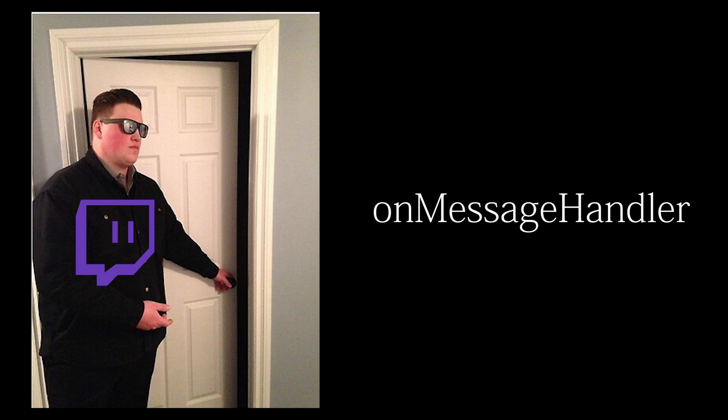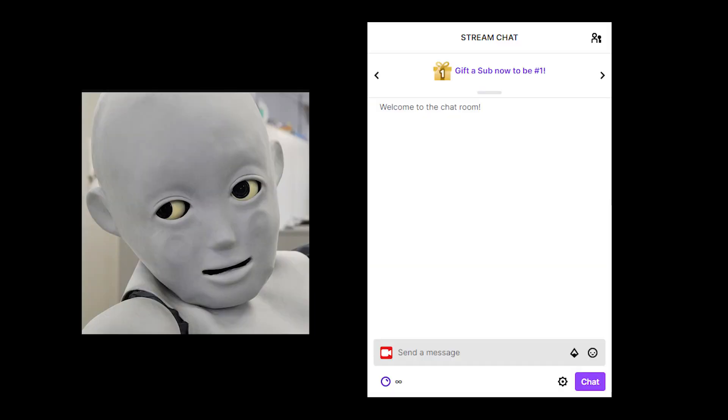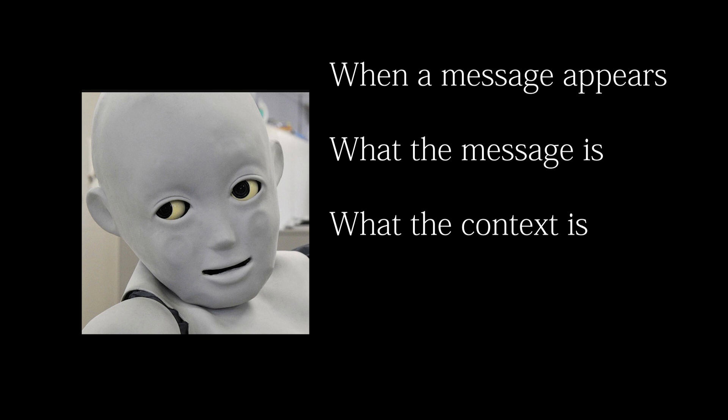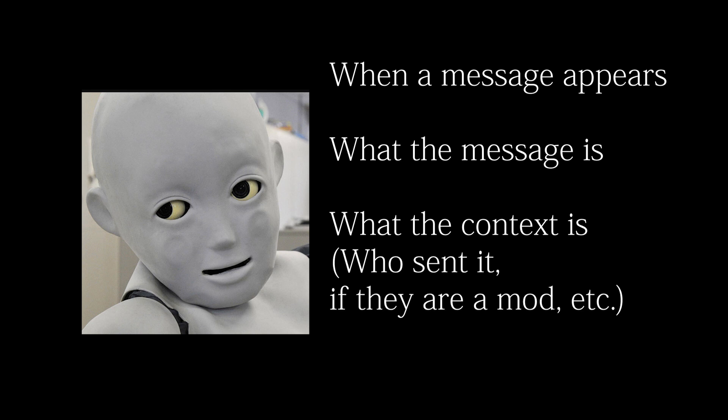Twitch then provides us with an event handler that will trigger whenever a message appears. With this, our bot knows whenever a message is sent in chat, it knows what the contents of the message is, and what the context is — the context being who sent that message, if they're a moderator or not, etc.